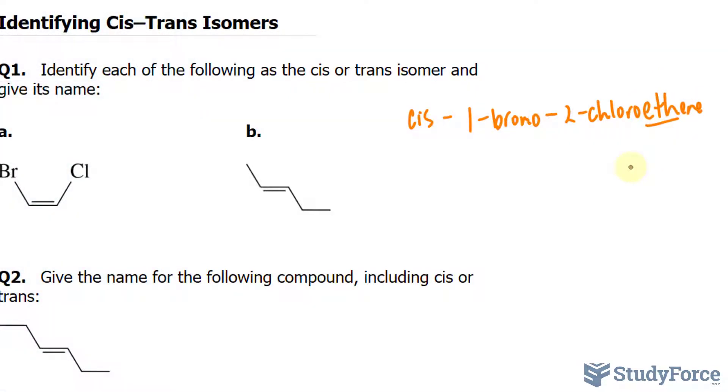That's the prefix for two-carbon molecules. Cis-1-bromo-2-chloroethene. Now let's move on to B.